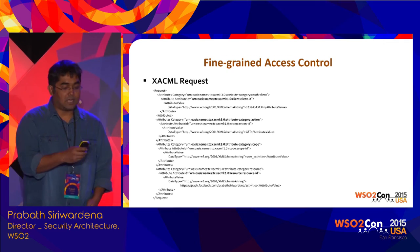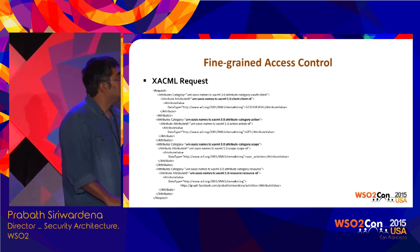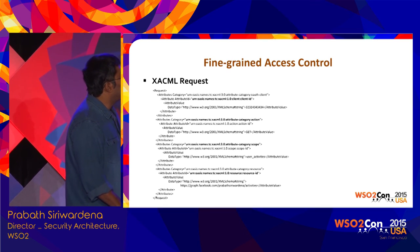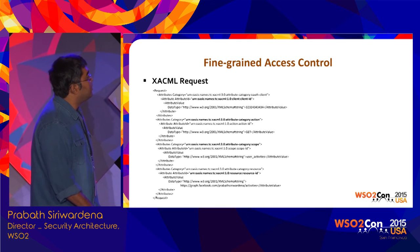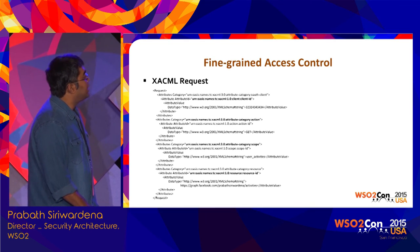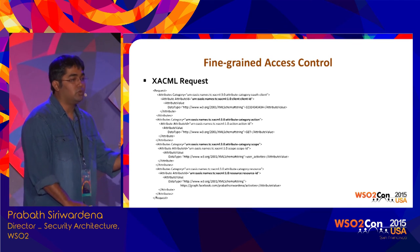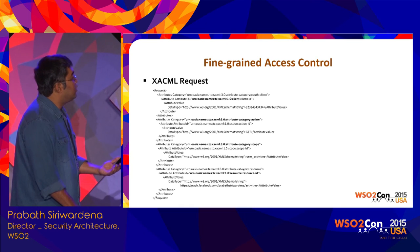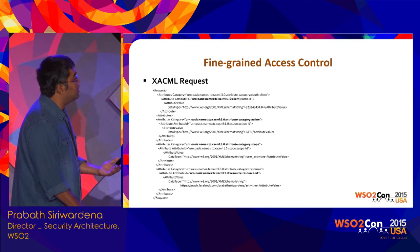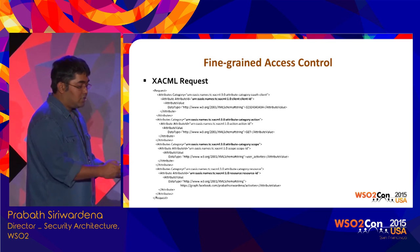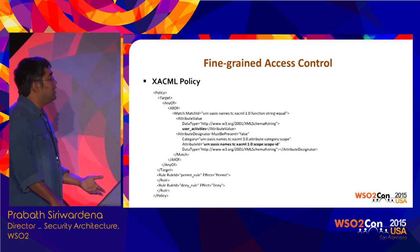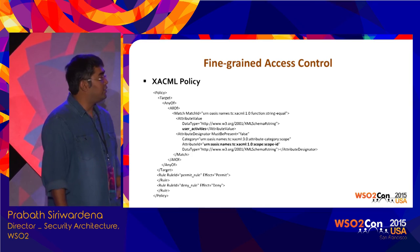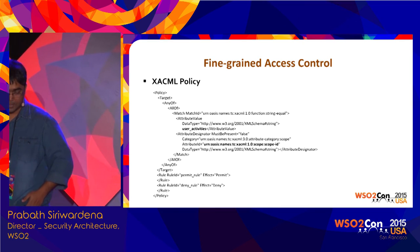Here is a sample XACML request. You define your own category and put the client ID there. Then you put the action — since you are the gateway, you know the action. Then you put the resource and also the scopes. Once you send this request to the PDP, you can define the policy there for how to do fine-grained access control based on these parameters.